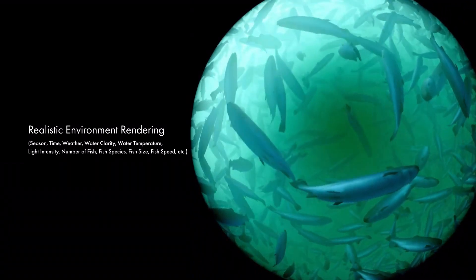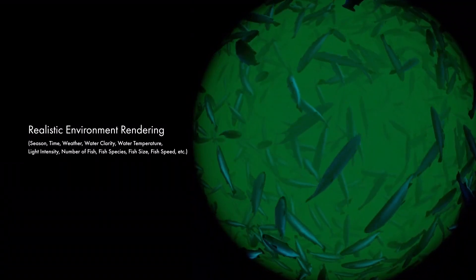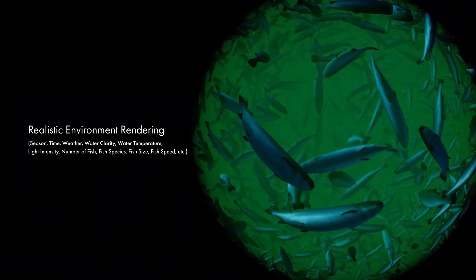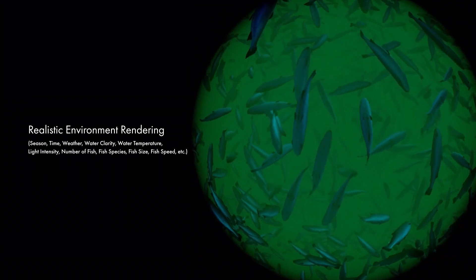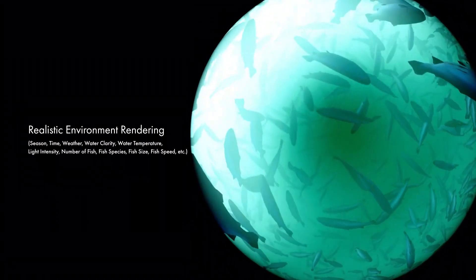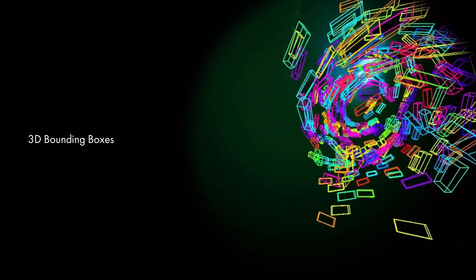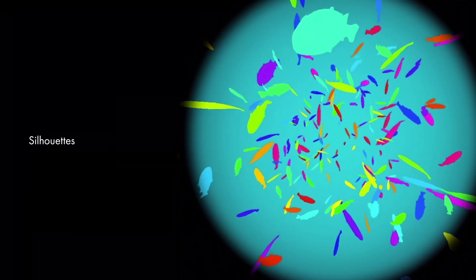light intensity, number and species of fish, fish size, and fish speed, and programmatically varying the parameters, a large number of patterns of data can be automatically generated. 2D bounding box ground truth data, 3D bounding box ground truth data, and silhouettes can be obtained automatically.